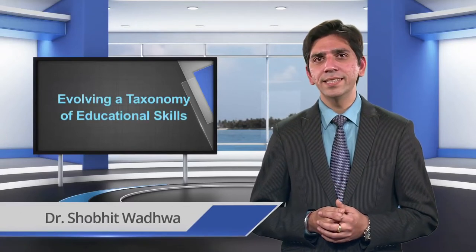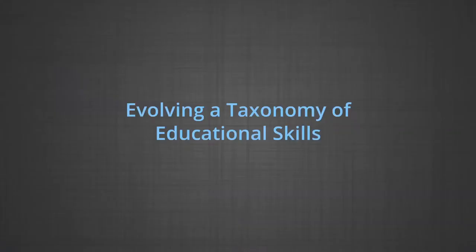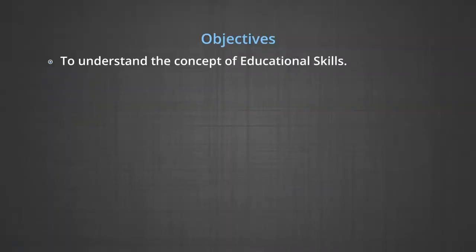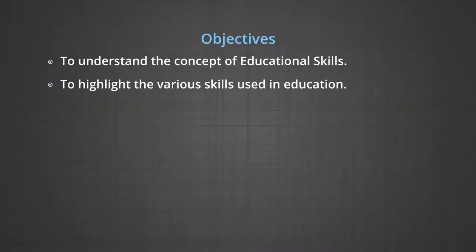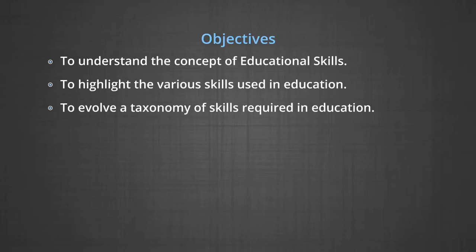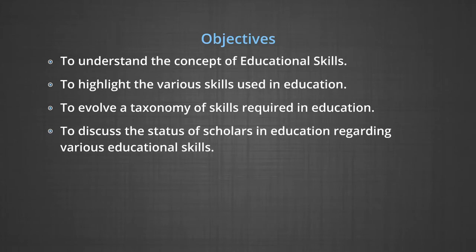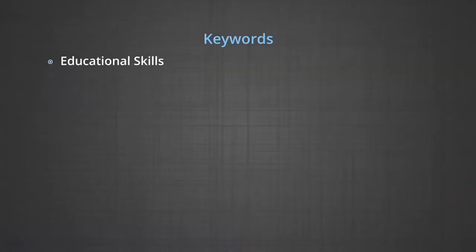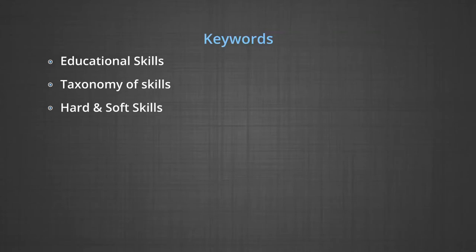The module we will be discussing today is on the topic 'Evolving a Taxonomy of Educational Skills.' The objectives of the module are to understand the concept of educational skills, to highlight the various skills used in education, to evolve a taxonomy of skills required in education, and to discuss the status of scholars in education regarding various educational skills. The key words of the module are educational skills, taxonomy of skills, and hard and soft skills.